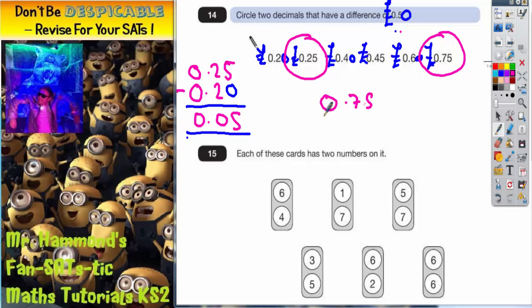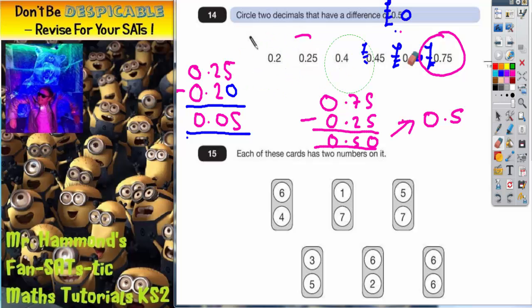Well, 0.75 take away 0.25. 5 take 5 is 0, 7 take 2 is 5, 0 take 0 is 0, and put your point in. So it's coming out with an answer of 0.50. But don't forget that 0.50 is exactly the same as 0.5, which is what it's asking for in the question.